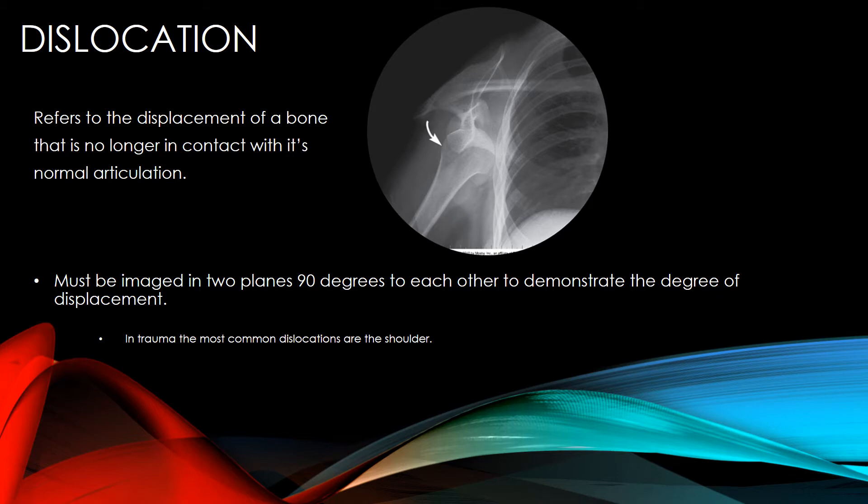Dislocation refers to the displacement of a bone that is no longer in contact with its normal articulation. It must be imaged in two planes 90 degrees to each other to demonstrate the degree of displacement. In trauma, one of the most common dislocations is the shoulder.